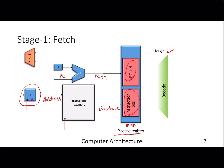At this moment I'm showing the notion of branch and jump, and the notion of target — in case we are jumping to some different portion of the code. That will come from a later stage of the pipeline, and once it comes, this multiplexer will come into picture. Depending on the control signal, it will either pick PC+4 or PC+4 plus target. Based on that, this will be the updated PC.